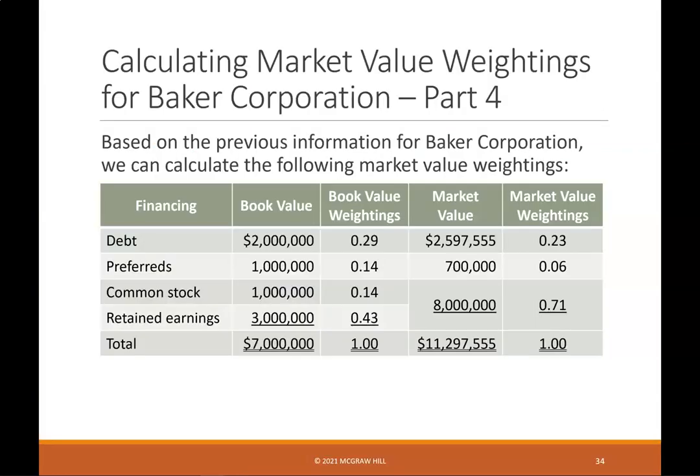Calculating market value weightings for Baker Corporation — part 4: Based on the previous information, we can calculate the following market value weightings: debt, preferreds, common stock, and retained earnings total. Book value weightings equal 100%. The market value weightings are: debt 0.23, preferreds 0.06, common equity 0.71, totaling 1.